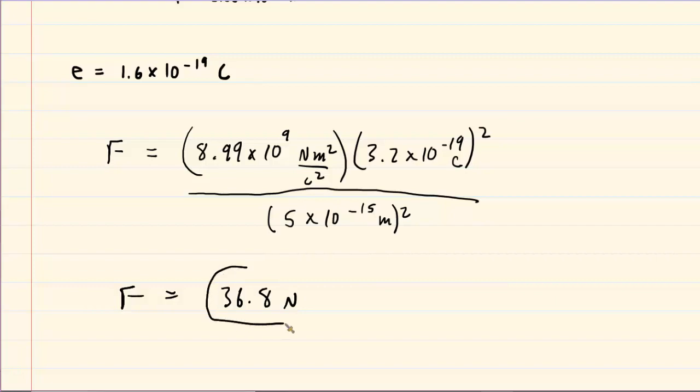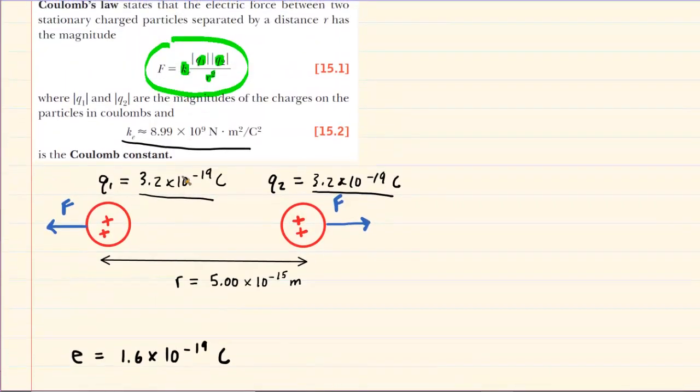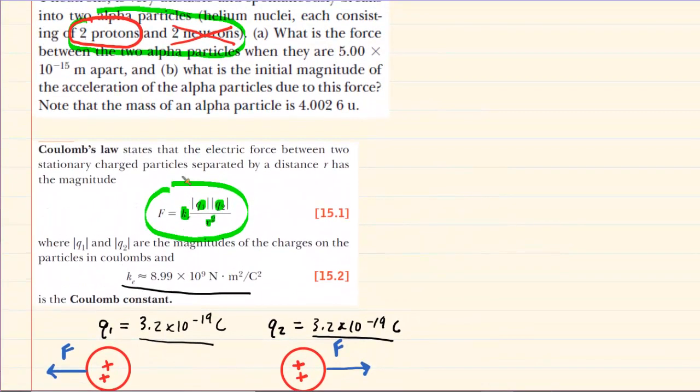Forgot to put a coulombs right there for the unit of charge. We can pick up our calculators and very carefully punch this in. When we do that, we're going to get a force of 36.8 newtons. This would be the correct answer for the magnitude of force that is acting on each alpha particle. So part A has been solved. We can come back up here. And then they ask, what is the initial magnitude of the acceleration of the alpha particle?